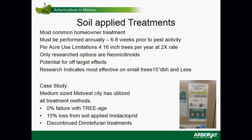Soil-applied treatments are the most common homeowner treatment available at garden centers. There is a per-acre use limitation — no more than the equivalent of about four 16-inch diameter trees per year at the 2x professional rate. The only research-supported options for soil treatments are neonicotinoid insecticides, and they are most effective on smaller trees. One Midwest city case study utilized all treatment methods: they had 0% failure with trunk injection but lost trees treated with soil-applied imidacloprid, and discontinued the dinotefuran bark spray treatments.